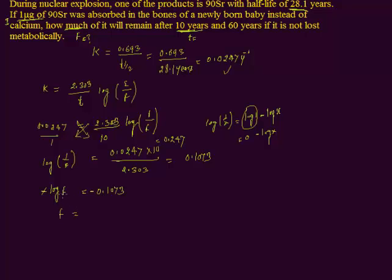Transferring log to the right side: f = antilog of -0.107, which equals 0.781. Since the initial amount was given in micrograms, the final amount is also in micrograms. So after 10 years, 0.781 micrograms of strontium-90 remains.